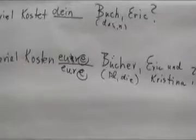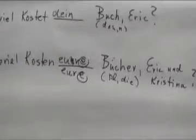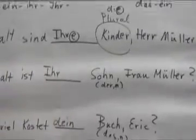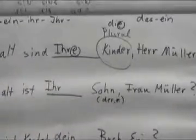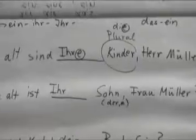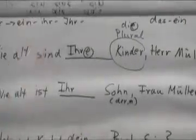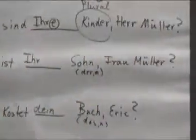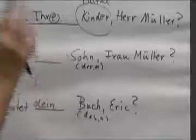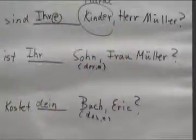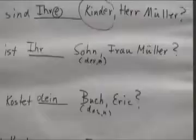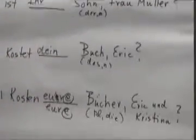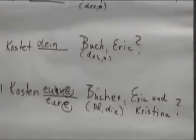Did everybody understand the difference between formal and informal? And why we sometimes put an e on it, and why we don't put an e on it? If it comes from der, or das, no ending. If it comes from a D-word, we add an e to it. If we're addressing somebody formally, we have to capitalize it, like Herr Müller, Frau Müller. If we don't talk formally, if we use first names, then we use, like, dein or euer. And that's it for possessive adjectives.